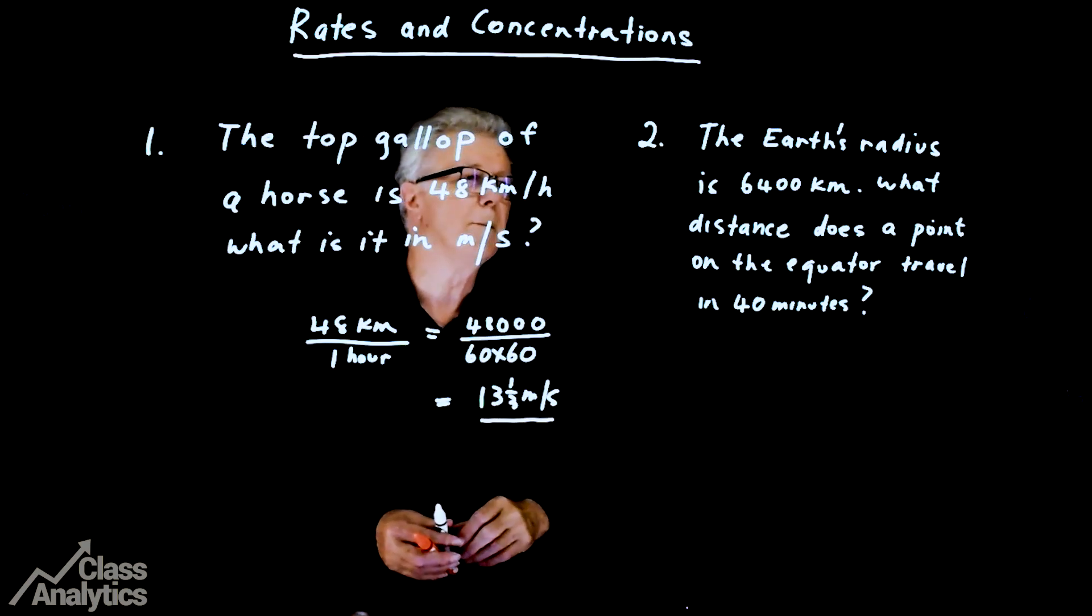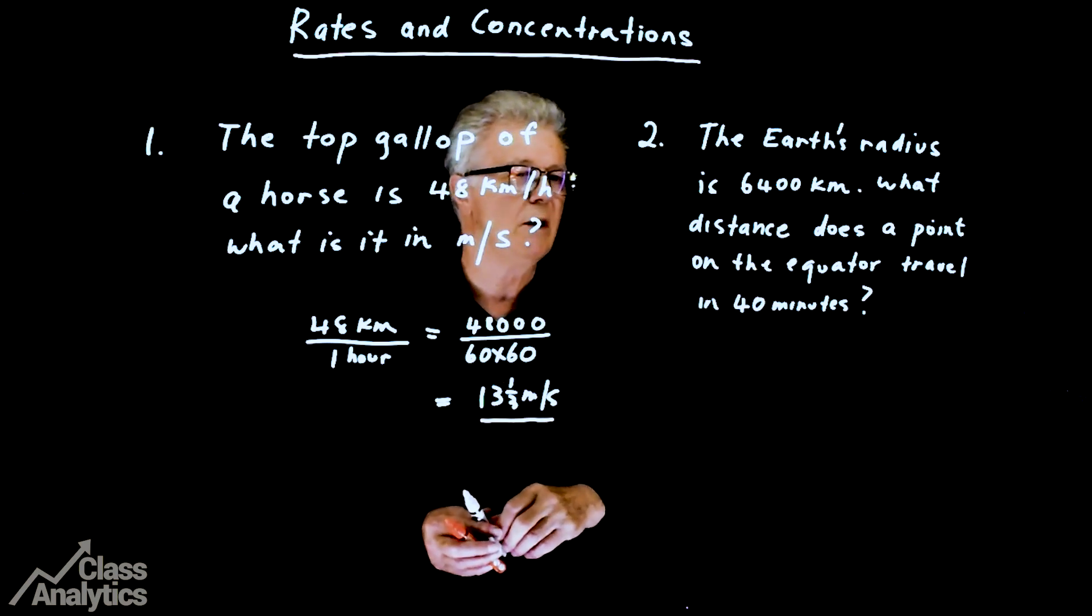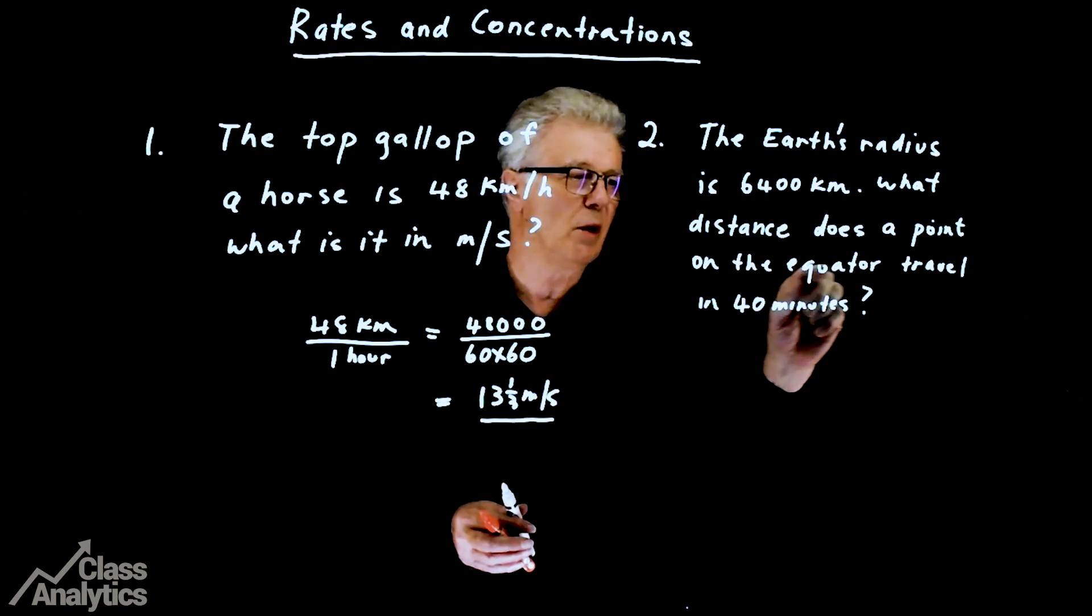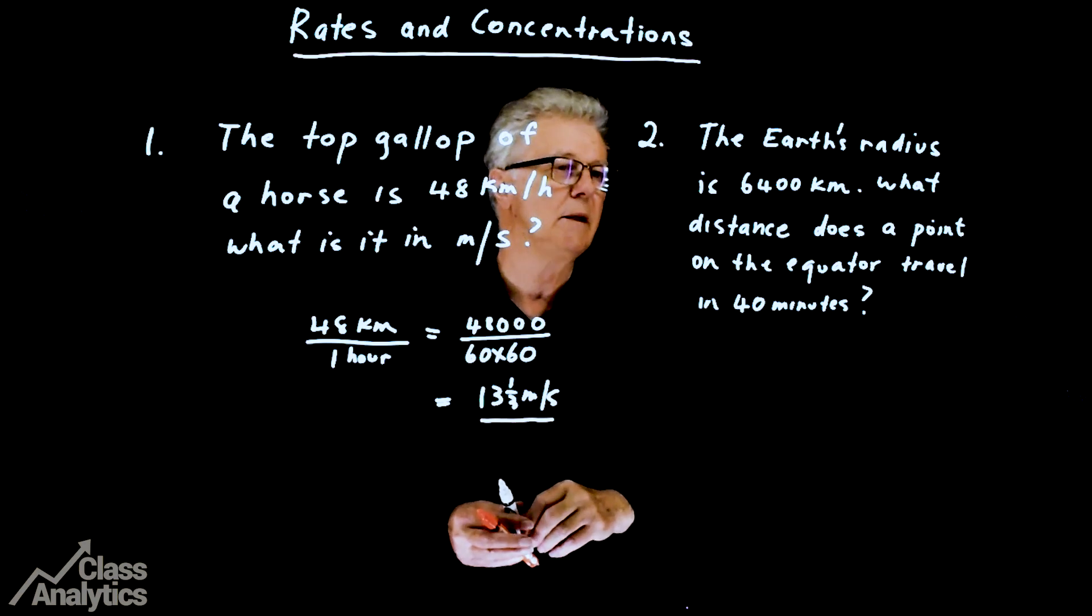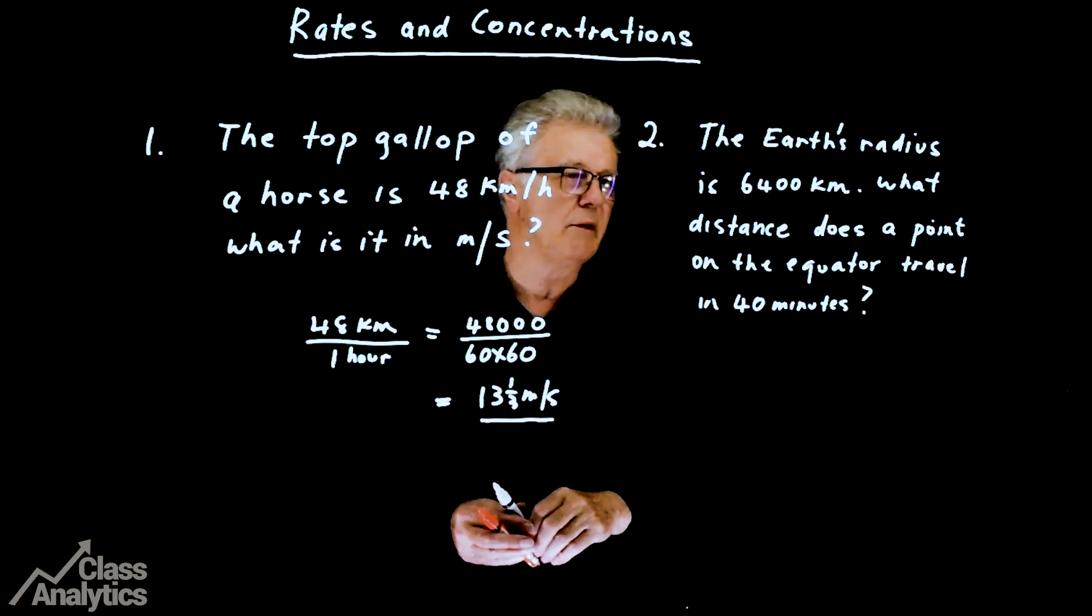Alright, next one. The Earth's radius is 6,400 km. What distance does a point on the equator travel in 40 minutes? First of all, work out the circumference of the Earth's equator.